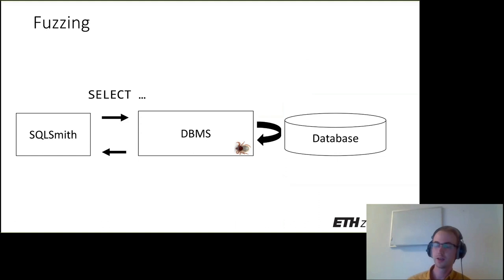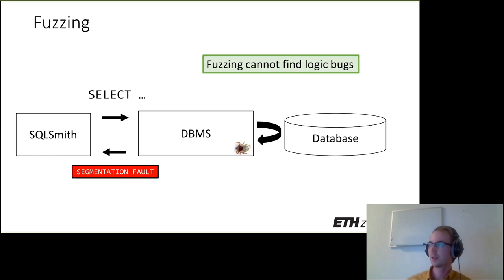The first thing you're probably familiar with is fuzzing. We could take a random query generator like SQLSmith, which is perhaps the most widely used one. This query generator would send random queries to the database management system and hopefully expose a bug like a segmentation fault, where the test oracle is that the process exits with an error.